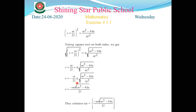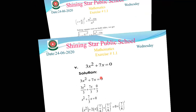In the seventh step — the last step — if there is simplification, do it. Combining: x = (-m ± √(m² - 4ln)) / 2l. Here √(4l²) = 2l, so both denominators become 2l.